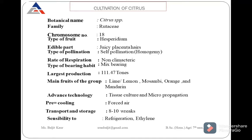The fruit type of citrus is Hesperidium. The edible part of citrus is the juicy placenta hairs which are present inside of the citrus fruit. Pollination type — it is a self-pollinated crop. This is a non-climacteric fruit.